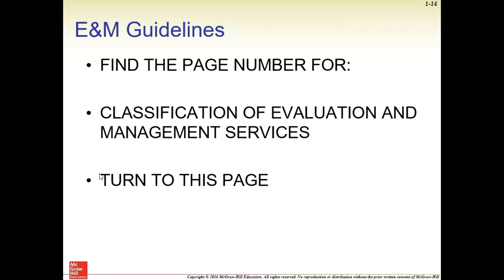The guidelines tell you what to look for in the medical record and how extensively something is documented — that gives you a higher level of service to code. That takes a lot of practice to get used to. The medical record is broken down: you have the history of present illness, family history, and social history. The doctor may do an exam — how extensive the exam is can determine what level of reimbursement you get.